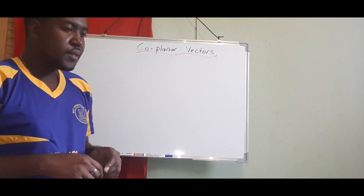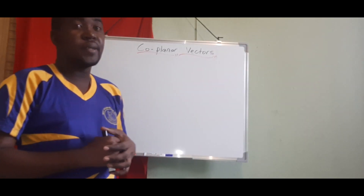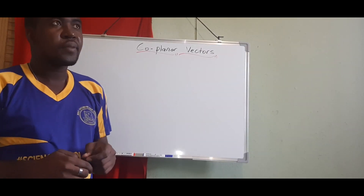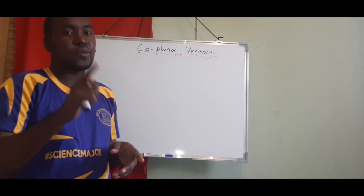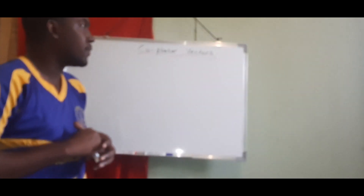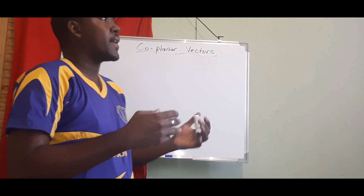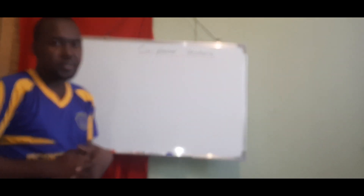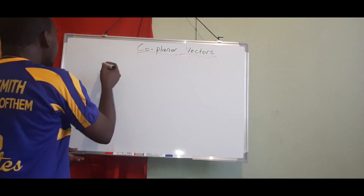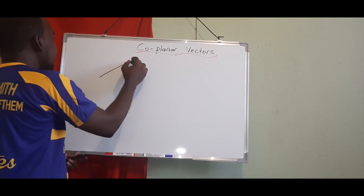The main purpose of this lesson is to revise how to resolve vectors. We resolve vectors to get one single vector, and that one vector is called the resultant vector. We're going to look at resolving vectors that are acting co-planar to each other.